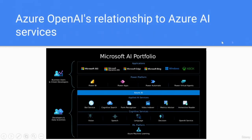Azure OpenAI's relationship to Azure AI services. The Microsoft AI portfolio has two categories: business users and citizen developers (with products like Microsoft 365, Dynamics 365, Edge, Microsoft Bing, Windows, Xbox, Power BI, Power Apps, Power Automate, and Power Virtual Agents); and developers and data scientists under Azure AI.